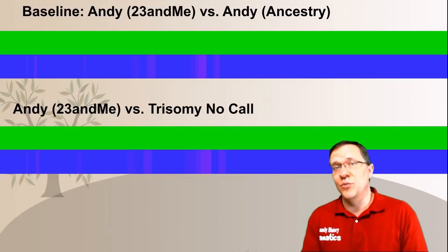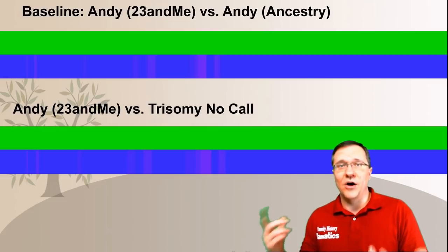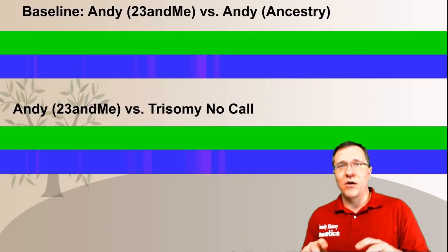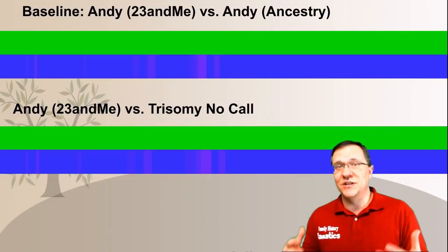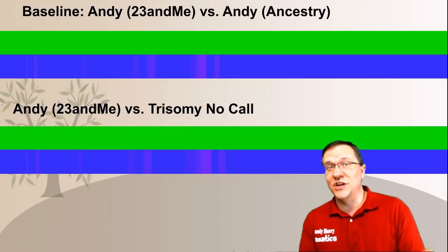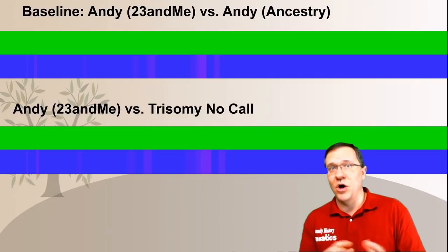I compared my 23andMe kit to my trisomy no-call kit. It is also all green and all blue because all I've done is taken out all those locations where there is a question. It's only looking at locations where it knows for sure. Because there's still enough data to call it a match, it's going to call it a match all the way across. That's what you're going to see if the company is using the no-call method — you're really not going to see any difference with somebody with Down syndrome on chromosome number 21 compared to the other chromosomes.